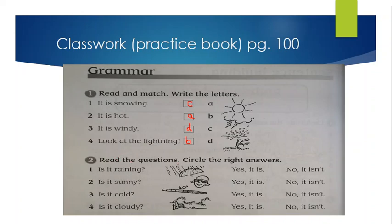Read the questions. Circle the right answers. Is it raining? Yes, it is. See the pictures and then answer. Is it raining? No, it isn't. It's 40 degree centigrade. On 40 degree centigrade, it is hot. Is it cloudy? Yes, it is. We can see clouds in the picture.